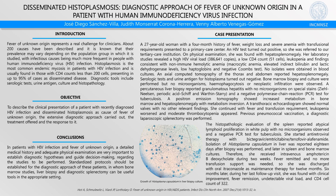Introduction. Fever of unknown origin represents a real challenge for the internist. About 200 causes have been described. Infectious causes are the most frequent etiology in people with HIV infection. Histoplasmosis is the most common endemic mycosis in patients with HIV infection, usually found in those with CD4 cell counts less than 200 cells, presenting in 95% of cases as disseminated disease.